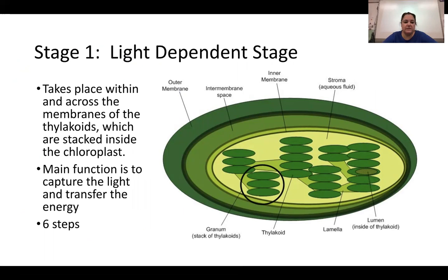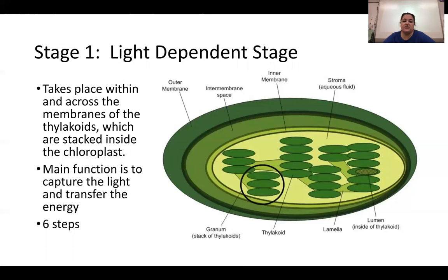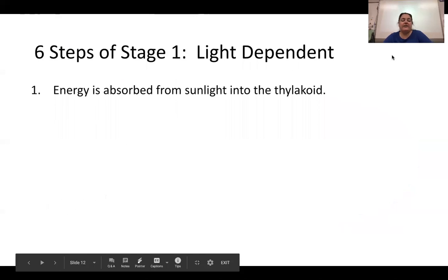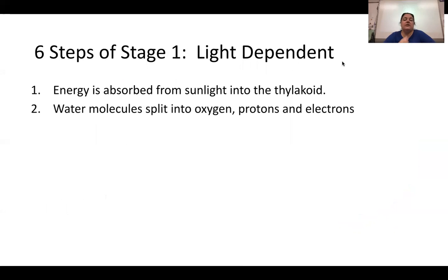Stage one is the light-dependent reactions, taking place in the thylakoids inside the chloroplast. There are six steps. Step one: energy is absorbed from sunlight into the thylakoid. Step two: sunlight hits the leaf, and water molecules in the leaf are split apart.